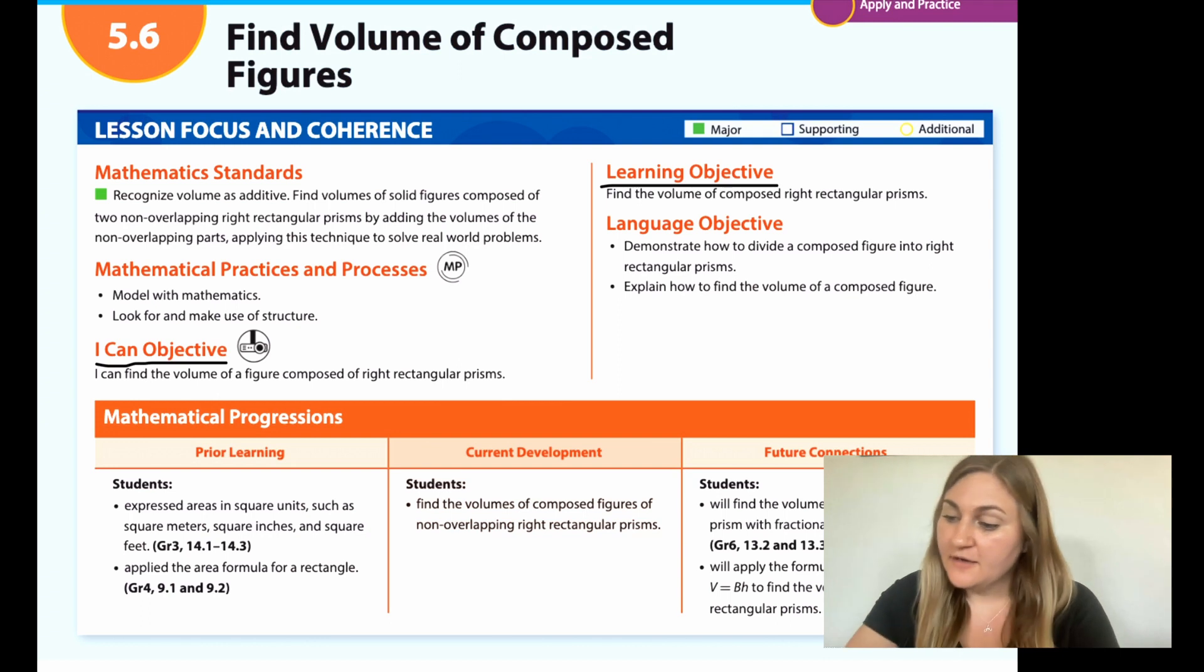It says I can find the volume of a figure composed of right rectangular prisms. The learning objective: find the volume of composed right rectangular prisms. In prior learning from 3rd grade, students expressed area in square units such as square meters, square inches, and square feet. In 4th grade, students applied the area formula for a rectangle.